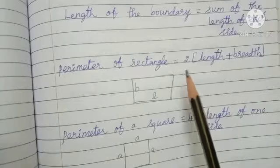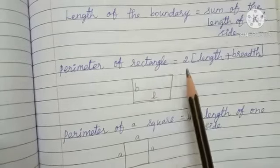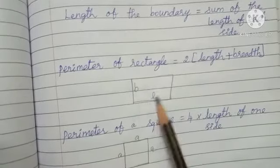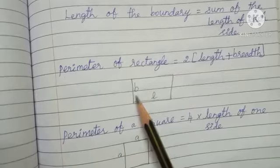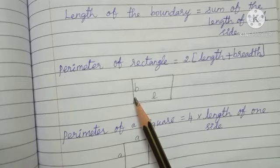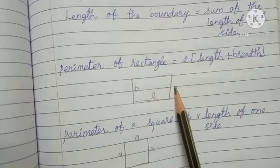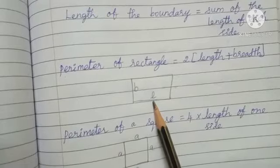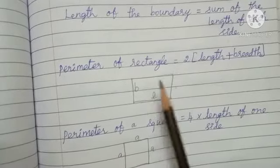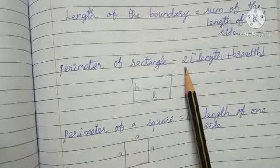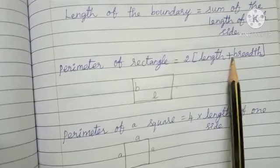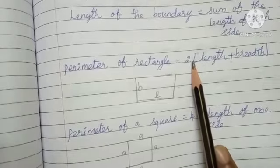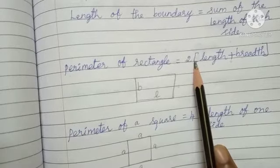Already you have learnt the formula. Perimeter of a rectangle equals two times of length plus breadth — where L is for length and B is for breadth. For a rectangle, opposite sides are equal: the two breadth sides are equal, and the two length sides are equal. So write: 2 multiplied by (length plus breadth). First do addition of length and breadth, then multiply by 2. This is the perimeter of a rectangle.